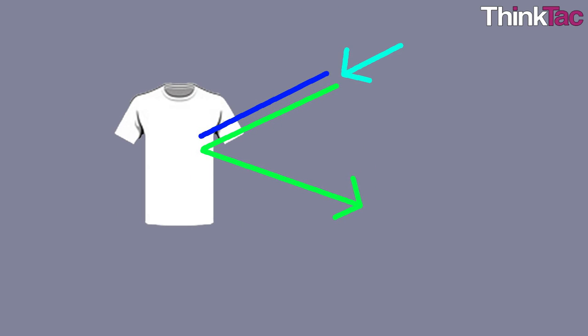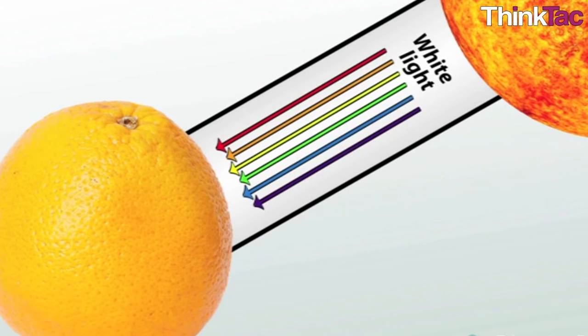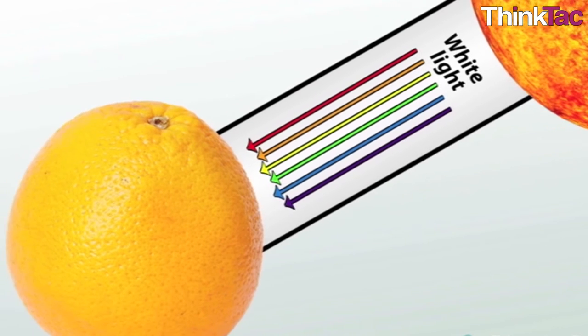Another example is if cyan light was shining upon the same shirt. Cyan is made up of green and blue colors, so the blue color would be absorbed as it was before. Now the shirt would appear green. An immediate question that comes to mind after understanding the subtraction of colors is how does color get absorbed? Why was the blue light absorbed by the shirt?